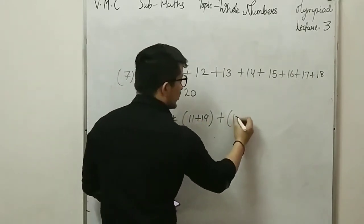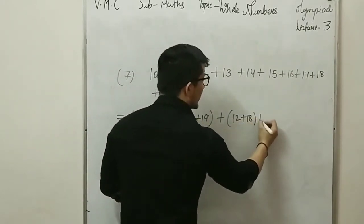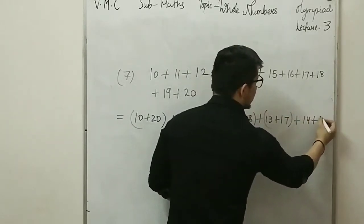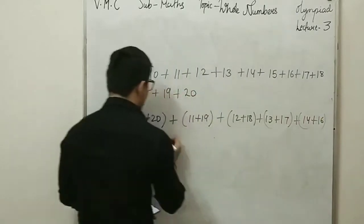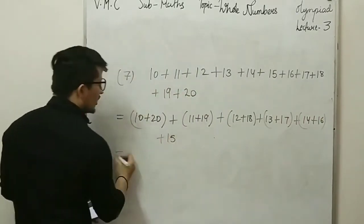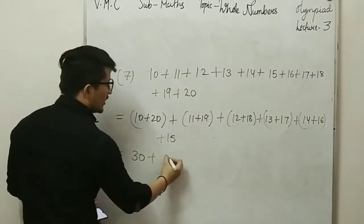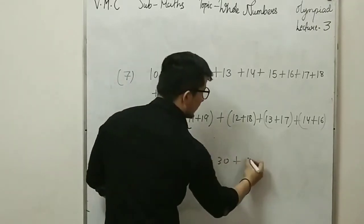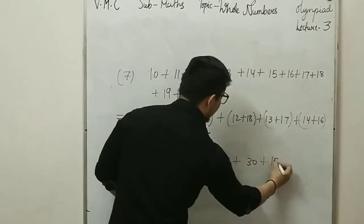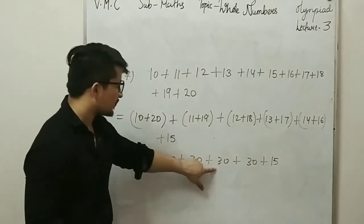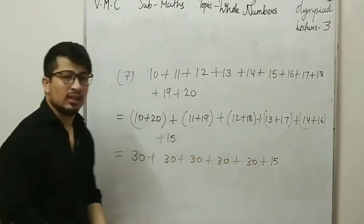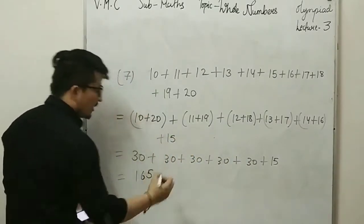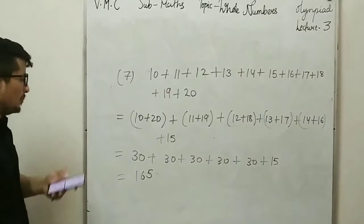For question 7, we have: 10+20, 11+19, 12+18, 13+17, 14+16, and the last one is 15. Each pair sums to 30: we get 30, 30, 30, 30, 30 — that is 5 pairs giving 150 — plus 15 equals 165. So option B is correct.